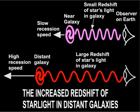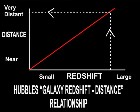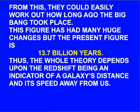The faster the galaxy moves away from us, the greater the redshift of particular lines in their spectrum. From the amount of change, astronomers can tell how fast a particular galaxy is travelling away from us. Hubble found a relationship between the distance a galaxy is from us and its redshift. From this they could easily work out how long ago the Big Bang took place. This figure has had many huge changes, but the present figure is 13.7 billion years. Thus the whole theory depends upon the redshift being an indicator of a galaxy's distance and its speed away from us.